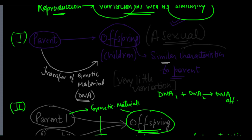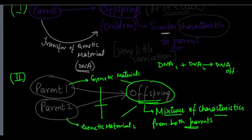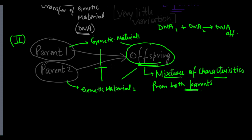Even if variation occurs over time in asexual reproduction, that variation becomes a characteristic for the organism to sustain its surroundings. On the other hand, where there are two parents — parent one giving genetic material one, parent two giving genetic material two, and their DNAs combining to form the genetic material of the offspring, giving a mixture of characteristics from both parents — this form of reproduction is known as the sexual form of reproduction.